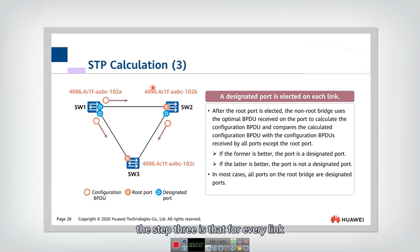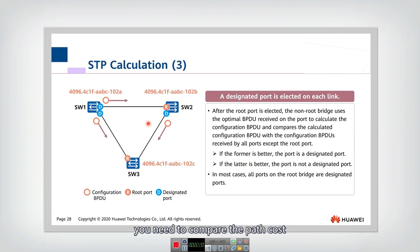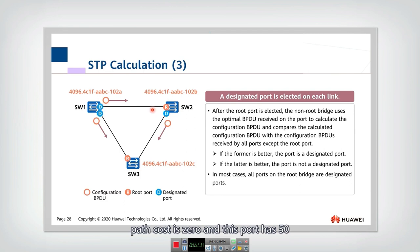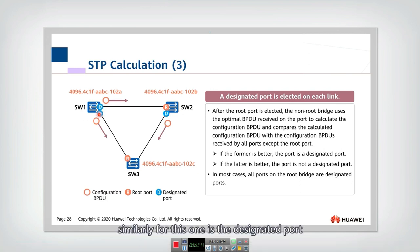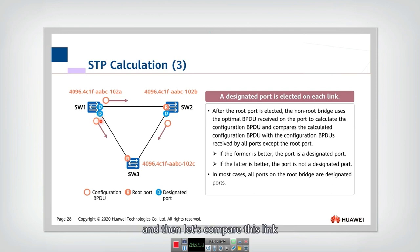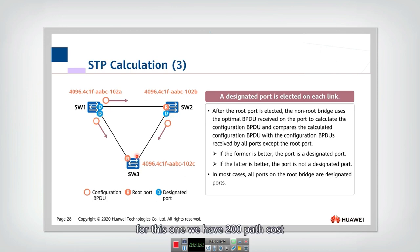Now let's look at step three. For every link, we need to select the designated port. To select the designated port, you need to compare the path cost. For example, for this link we have two ports — this port is directly connected to the root, so the path cost is zero, while this port has a cost of 50, so the lower-cost port is set as the designated port. Similarly, all ports on the root bridge will be designated ports. For the other link, one port has a path cost of 50 and the other has 200, so the port with 50 is selected as the designated port.